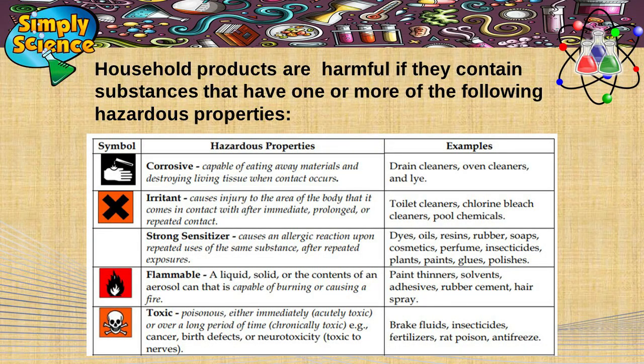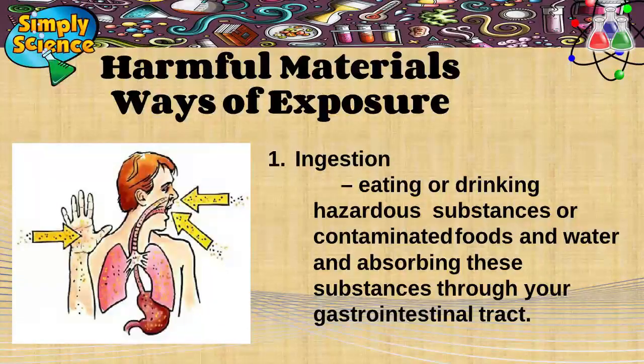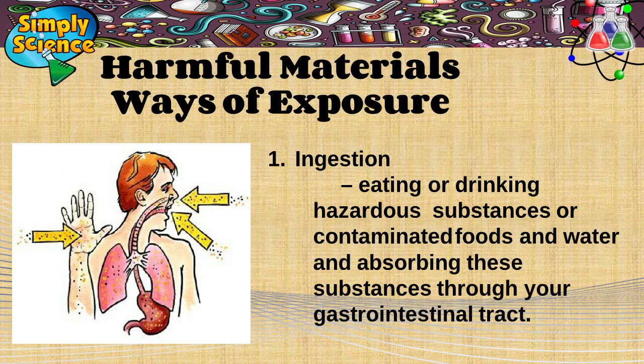Household products are harmful if they contain substances that have one or more of the following hazardous properties: corrosive, irritant, strong sensitizer, flammable, and toxic. There are three ways how materials may harm our body. Number one is by ingestion.